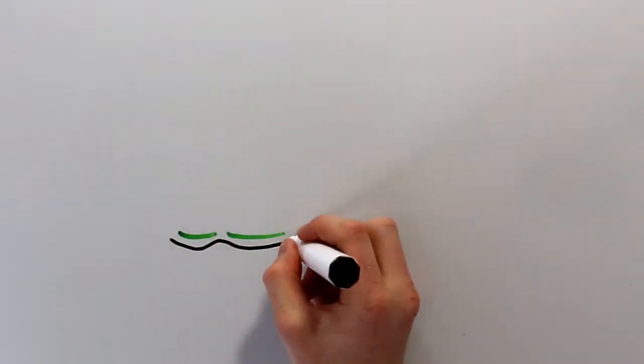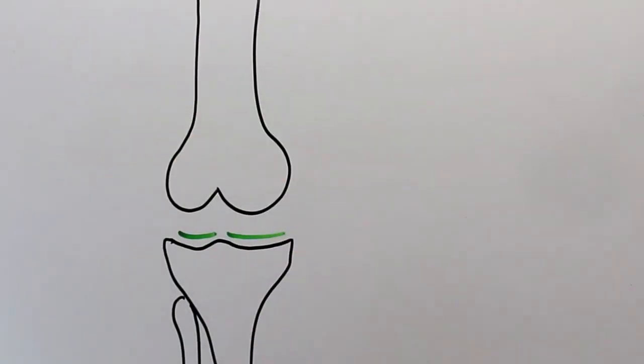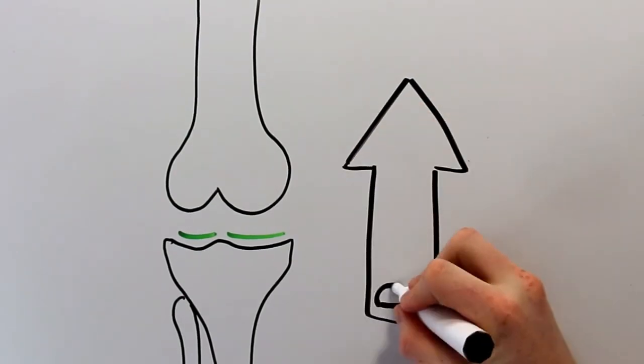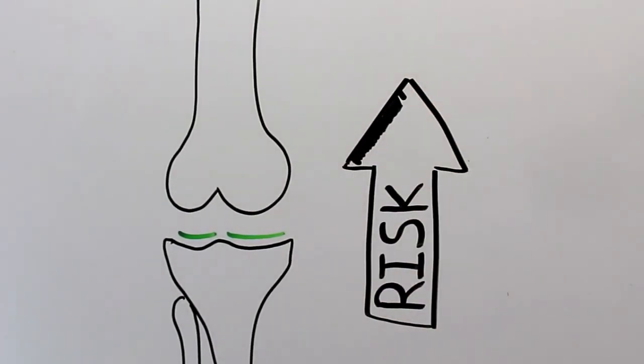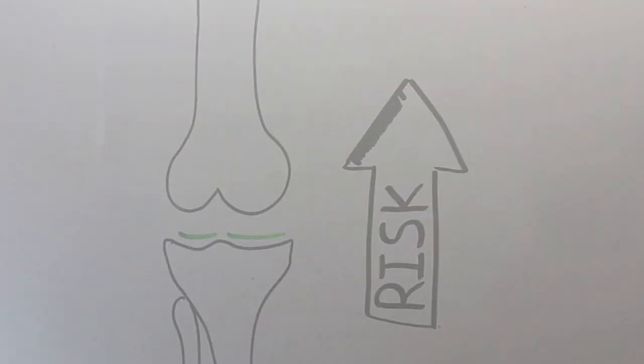To figure out what causes this condition, we can think about things that might wear down the cartilage. Things that might cause extra stress on the knee. We usually call these things risk factors, because they don't guarantee that you'll develop osteoarthritis, but they certainly put you at greater risk for it.